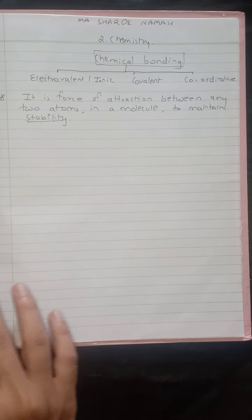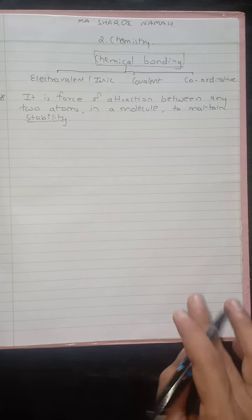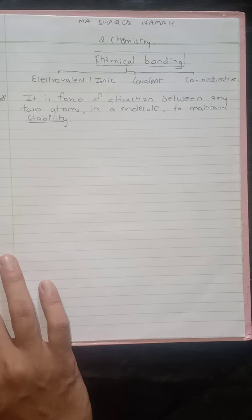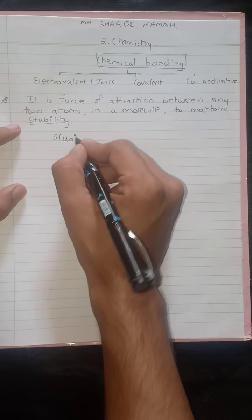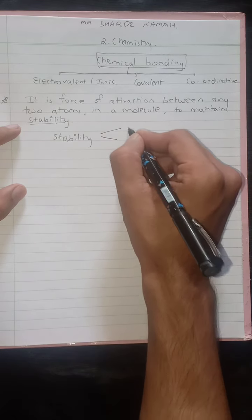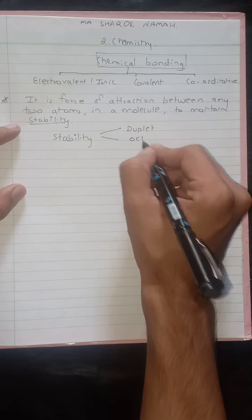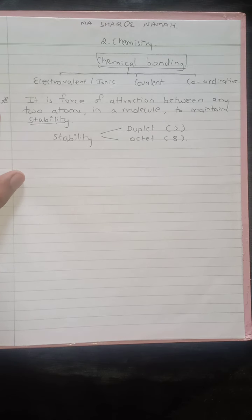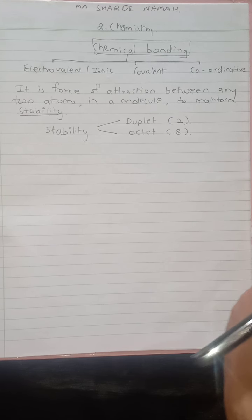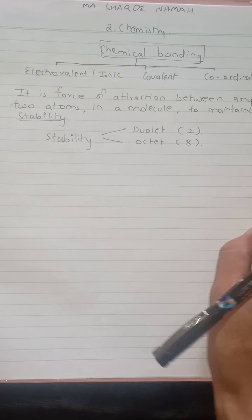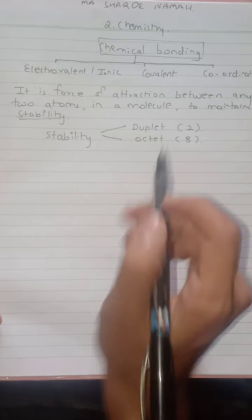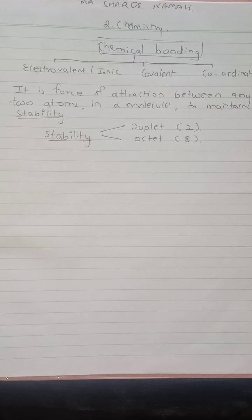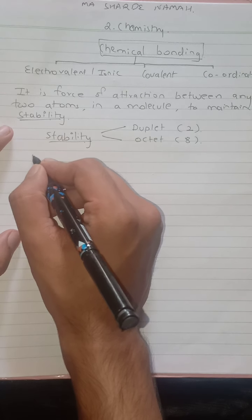The word stability means — we have already studied this basic chemistry. How we come to know whether an atom is stable or not: stability follows two principles — one is the duplet and the other is the octet. The word duplet means two and octet means eight. So stability means following the duplet or octet rule.